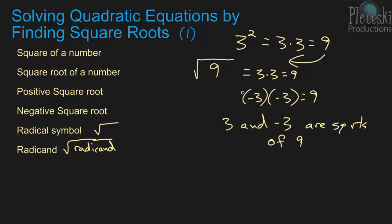The 3 is going to be your positive square root and negative 3 is your negative square root, because 3 times 3 is 9 and negative 3 times negative 3 is also 9. So any square root is going to have a positive square root and a negative square root.